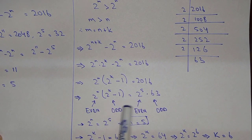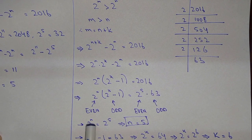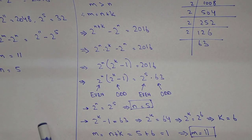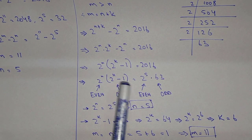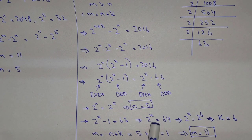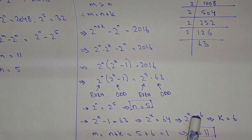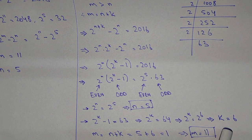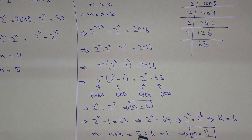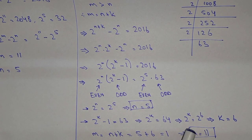Since 2 power k minus 1 is even minus 1, it is odd, and 63 is odd as well. So matching even to even and odd to odd, we get 2 power n equals 2 power 5, meaning n equals 5. For the odd part, 2 power k minus 1 equals 63, so 2 power k equals 64, which is 2 power 6, giving k equals 6. But we need m, so m equals n plus k equals 5 plus 6 equals 11.